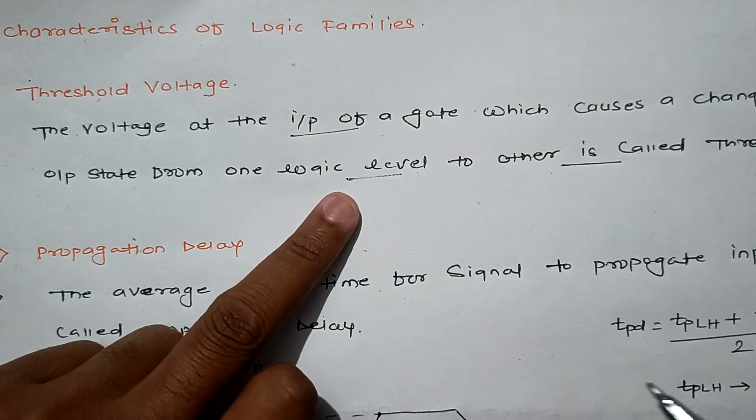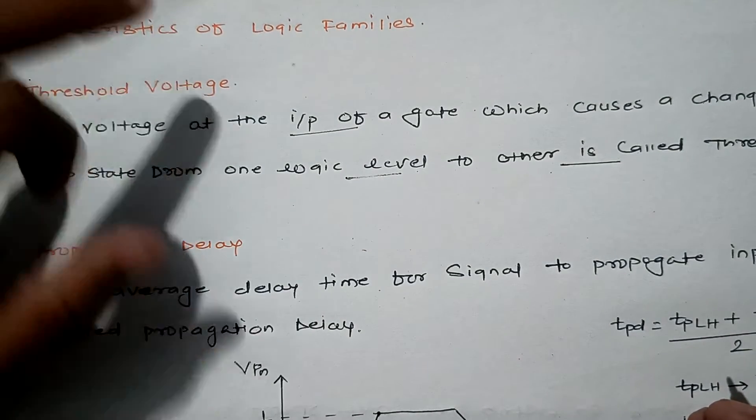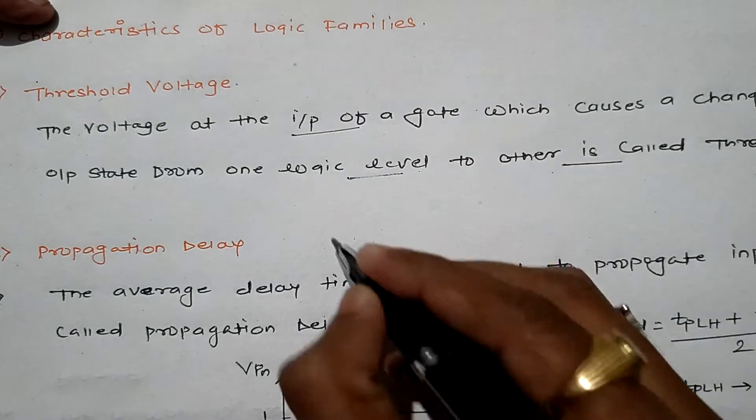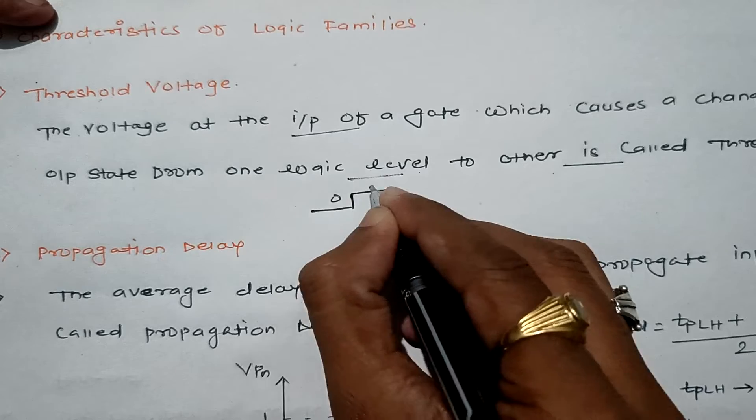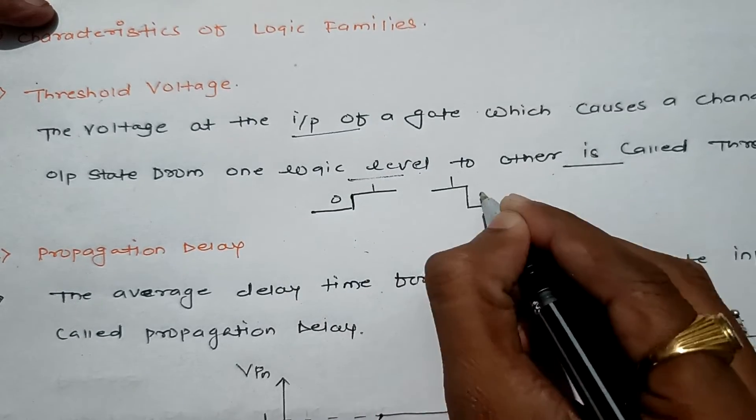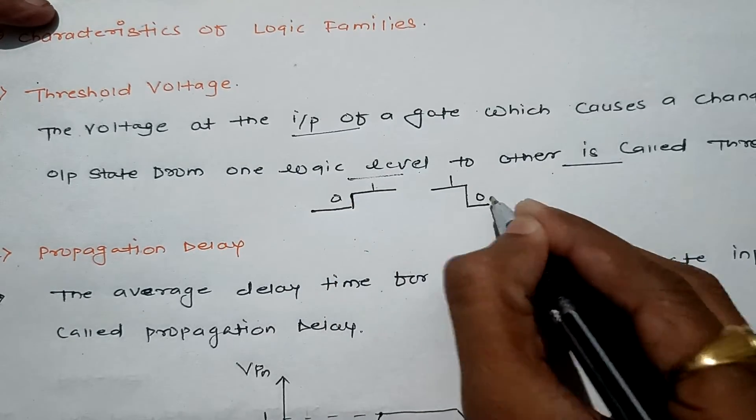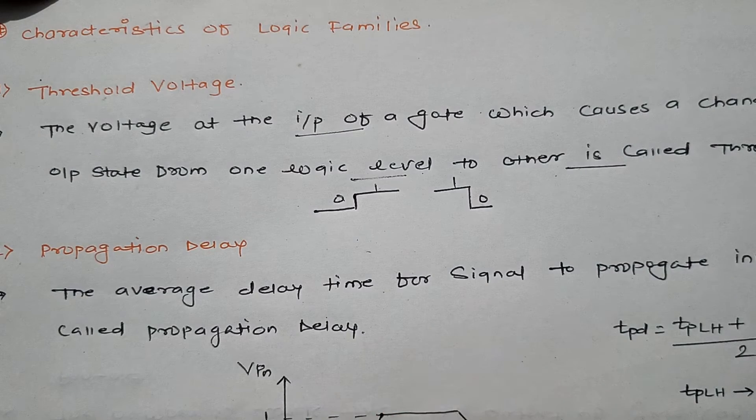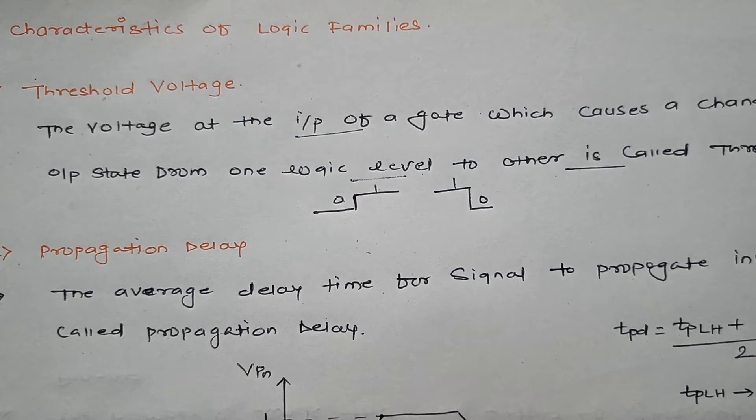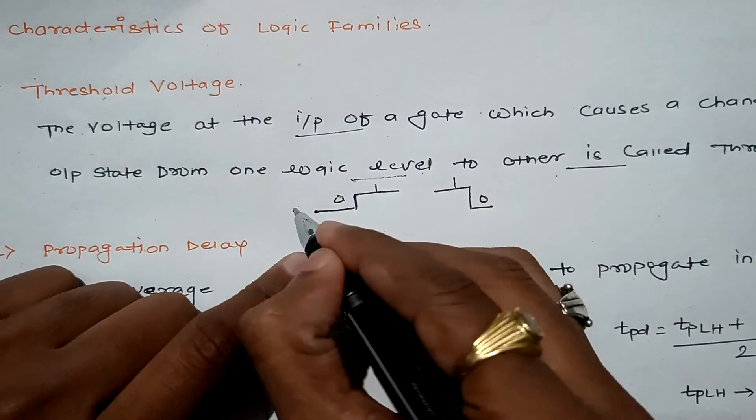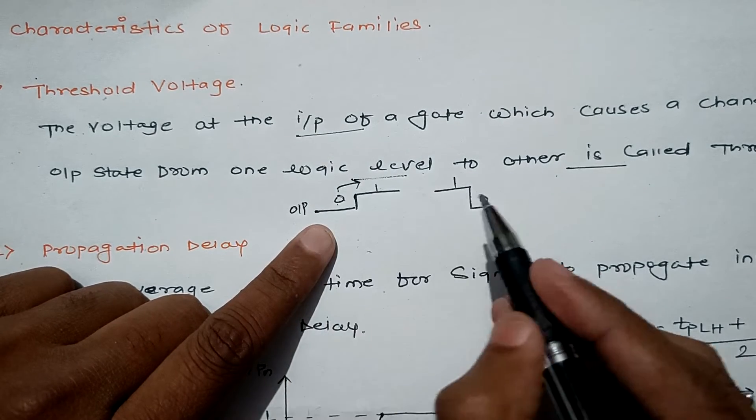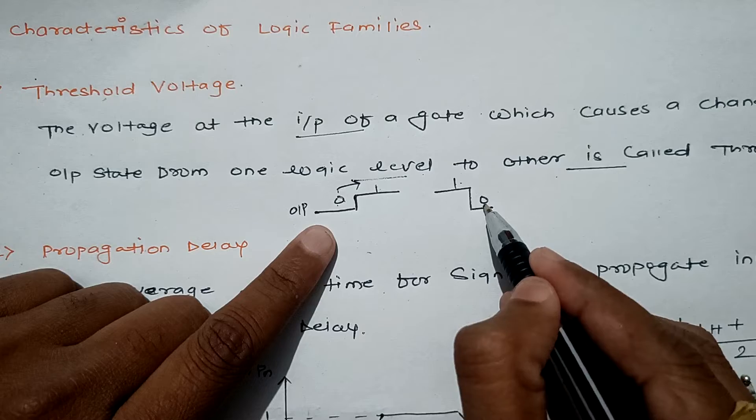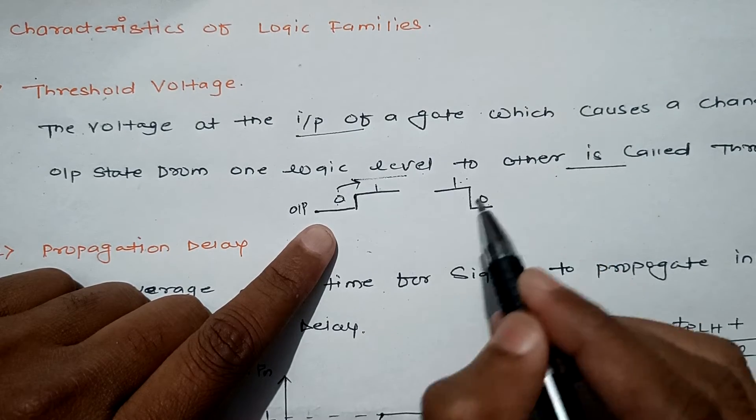If you consider the logic level considerations, we can have structure like this: either from zero to one or one to zero. The voltage which we are applying at the input causes the output to change from low level to high level or from high to low level.